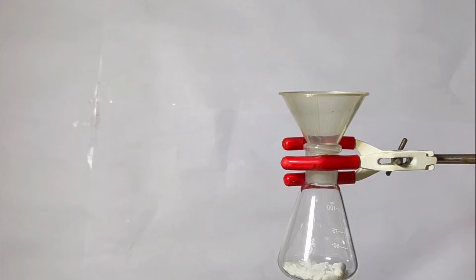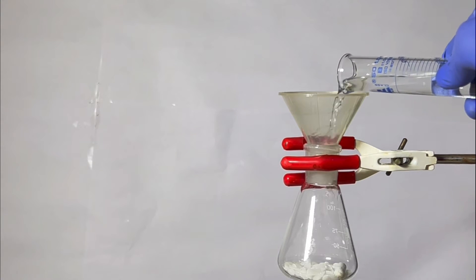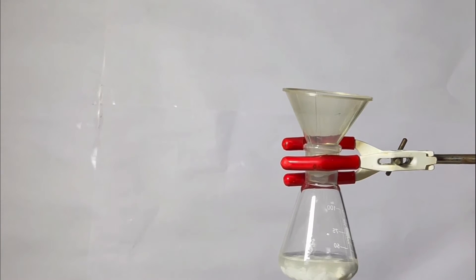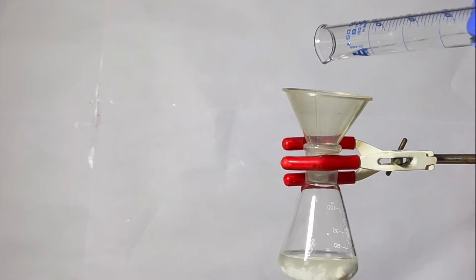Next, 40 milliliters of methanol was added to the flask. Some amount of methanol from the 40 ml volume was used to rinse any leftover sodium hydroxide present in the beaker, and that too was transferred to the flask. Then the remaining methanol was used to wash down everything to the flask.